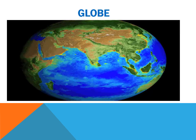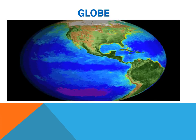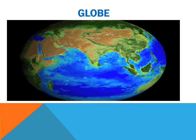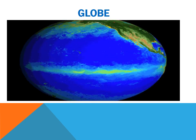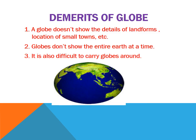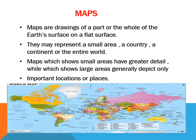The different physical features and the locations of places are also marked more or less clearly on the globe. However, a globe has certain disadvantages. The demerits of a globe are: it doesn't show the details of landforms or the location of small towns. Globes don't show the entire earth at a time, and it is difficult to carry them around. Larger globes can show more details, but they are difficult to handle. Some small areas have greater detail, while maps showing large areas generally depict only important locations.